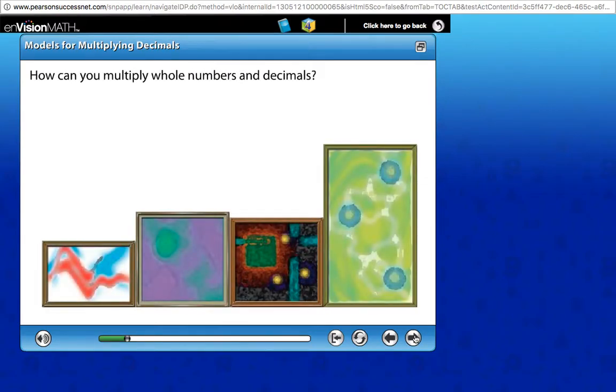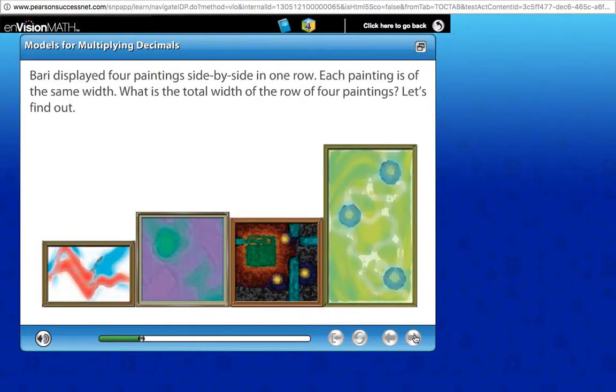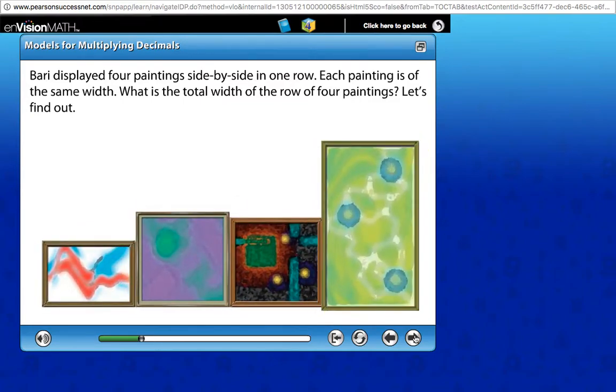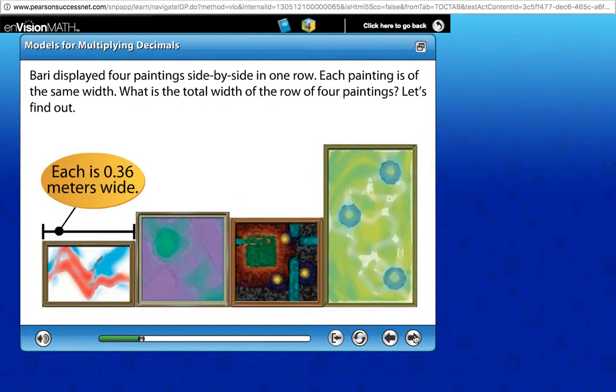How can you multiply whole numbers and decimals? Barry displayed four paintings side by side in one row. Each painting has the same width. What is the total width of the four paintings?